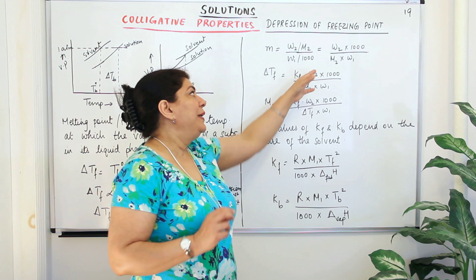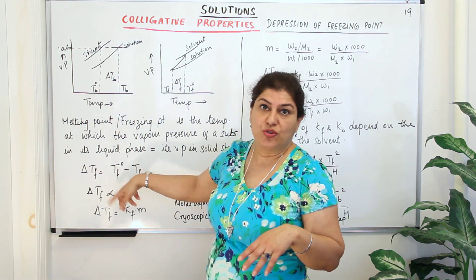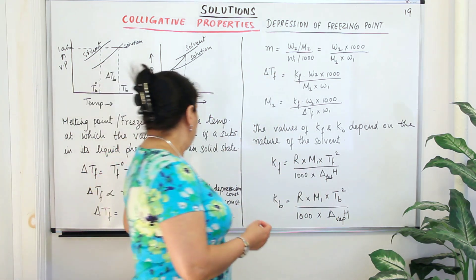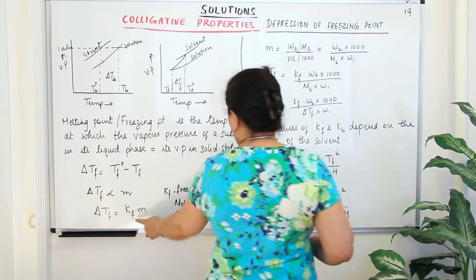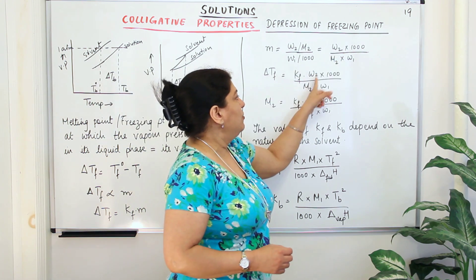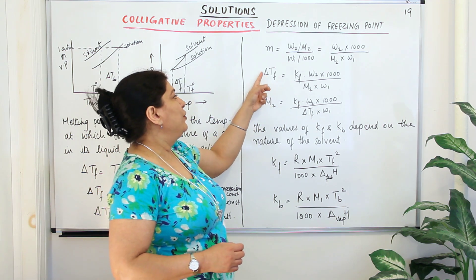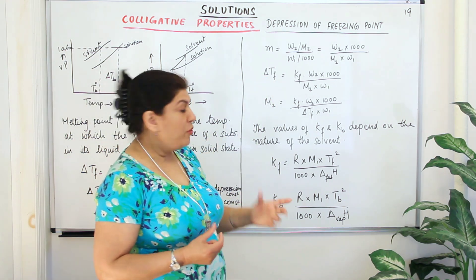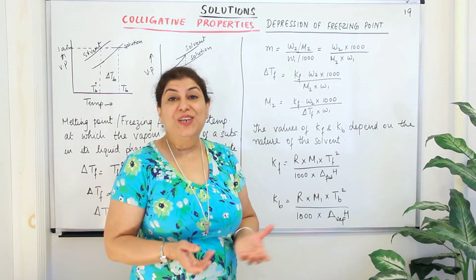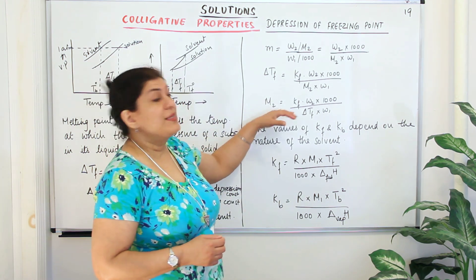Substituting this into delta Tf = Kf·m, we get delta Tf = Kf × (w2 × 1000) / (M2 × w1). From this formula, if you have the value of delta Tf — the difference in freezing point — you can calculate the molar mass M2 of the solute, in case you do not know what the solute is.